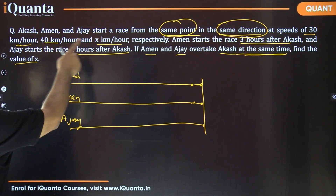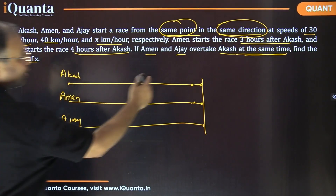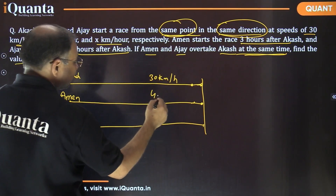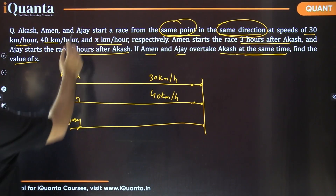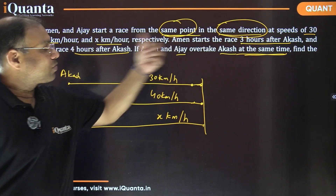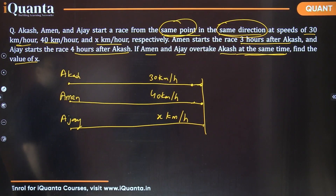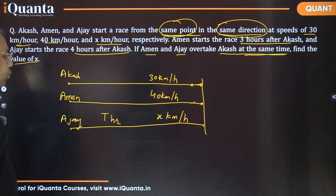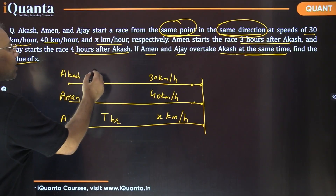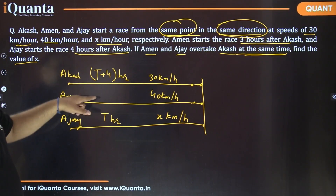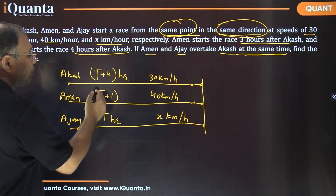We don't know the distance traveled, but we know their speeds: 30, 40, and x km/h for Akash, Aman, and Ajay respectively. Aman starts three hours after Akash, and Ajay starts four hours after Akash. If Ajay takes t hours to travel this distance, then Akash takes t + 4 hours. Since Aman started three hours after Akash, Aman takes t + 1 hours.